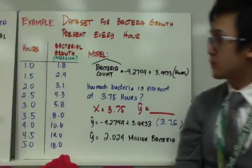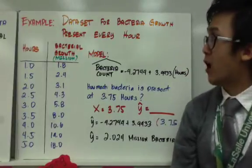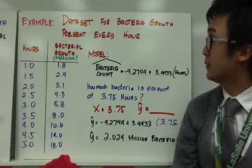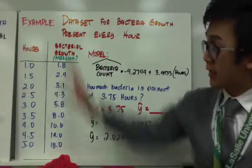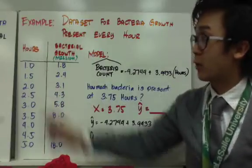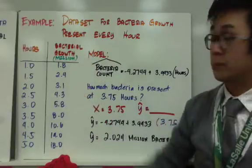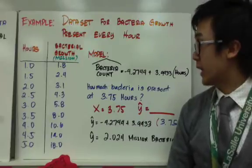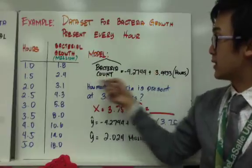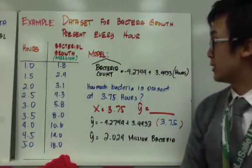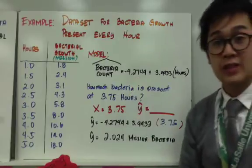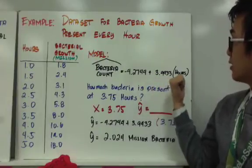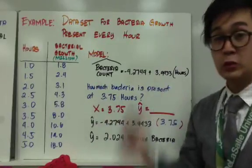Here's our example. Suppose we're working on a dataset of bacterial growth and the number of bacteria present every hour. Hours will be our explanatory variable and bacterial growth will be our response variable. Using technology or a calculator, we find the model: predicted bacteria count equals negative 4.2744, which is our y-intercept, plus 3.9433 times the number of hours, which is our slope.